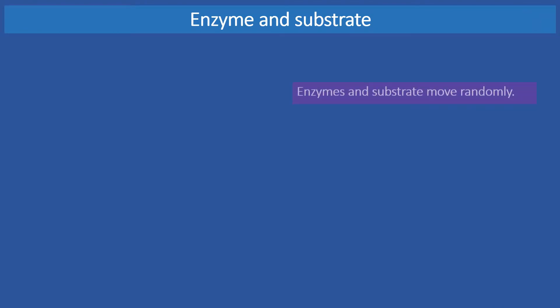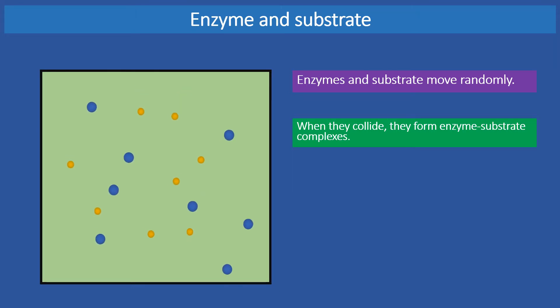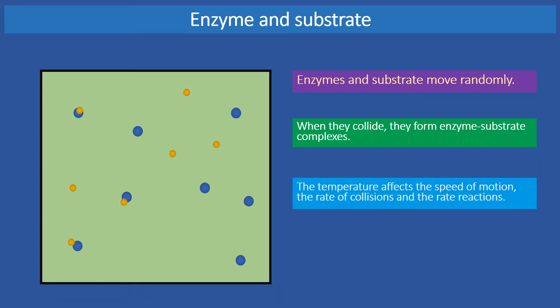Enzymes and substrate move randomly and when they collide they form the enzyme substrate complexes. In order to help understanding I have simplified the shapes and each blue dot represents an enzyme while each yellow dot represents a molecule of substrate. The temperature affects the speed of motion, the rate of collisions and the rate of reactions.